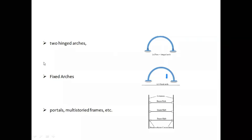For a two-hinged arch, the number of internal reactions is two at each support, giving a total of four. Four minus three equals one, so it is indeterminate to a degree of one. For a fixed arch, both ends are fixed with three reactions each, giving six total. Six minus three equals three, so a fixed arch is indeterminate to a degree of three. Portal frames are also an example of indeterminate structures.